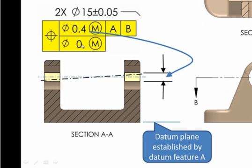This is saying the two holes have to be in position within zero if they're made at their smallest size. As they get bigger they can miss a line a little bit, but let's say I was assembling a shaft in here—that would assure assemblability.